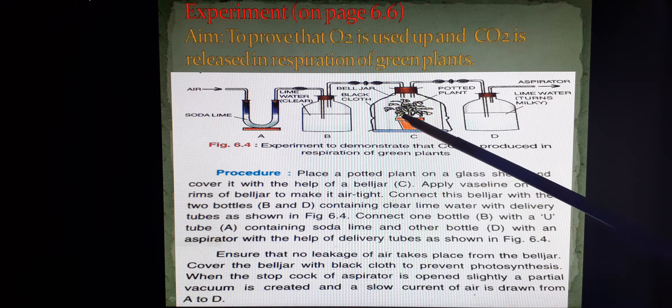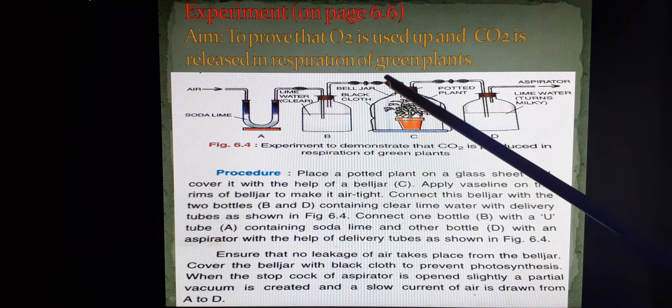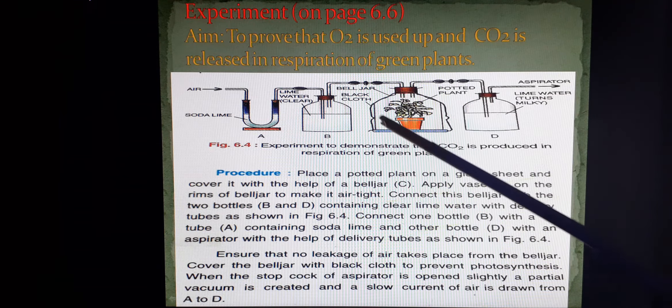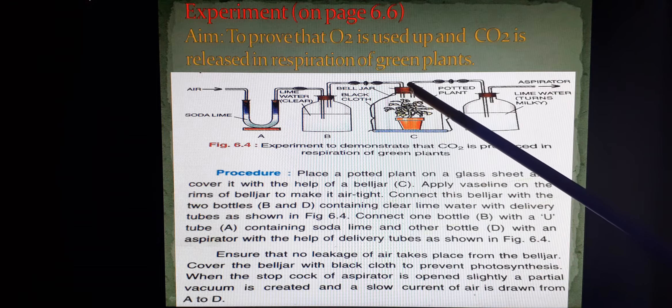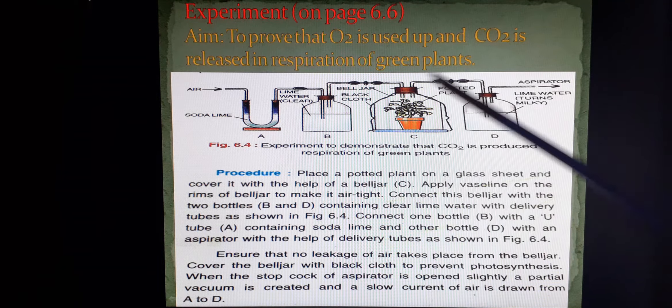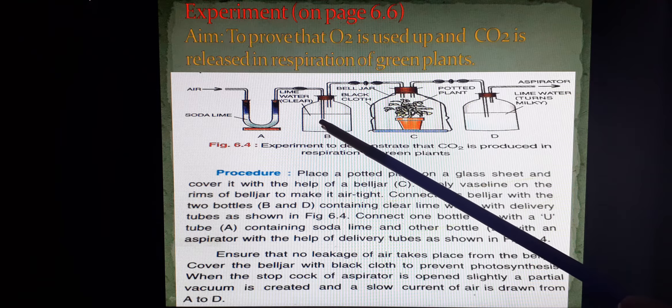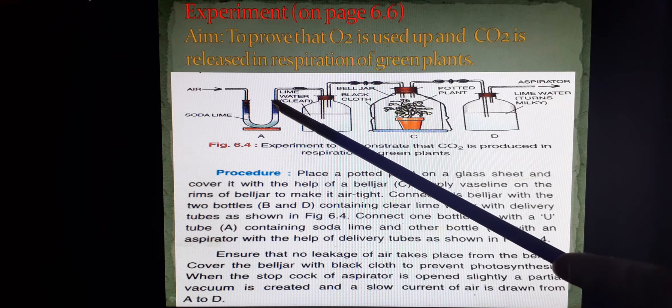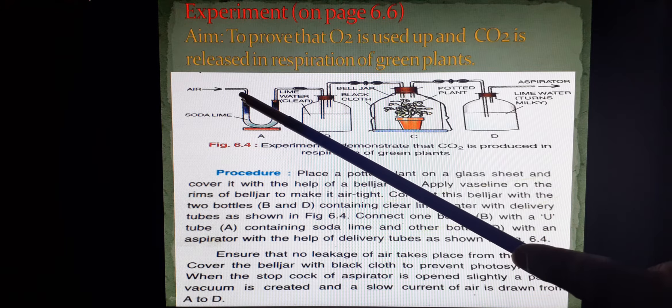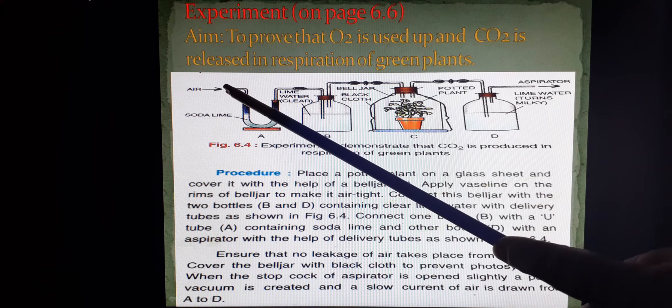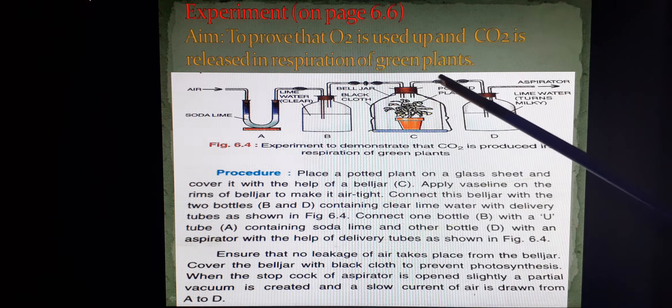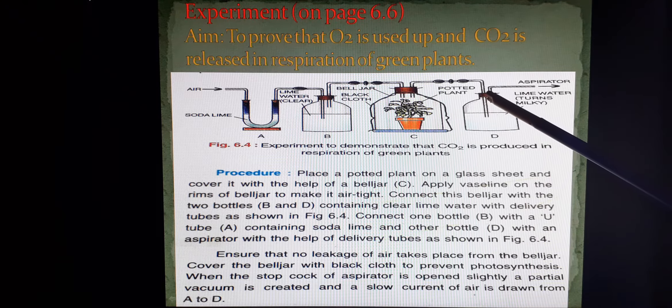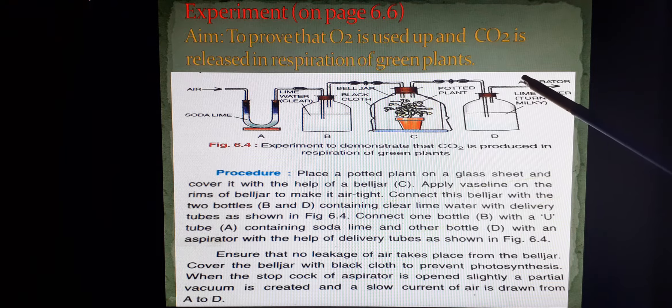The rim of the bell jar is sealed with vaseline so that the whole apparatus becomes airtight. The upper end of the bell jar has a stopper with two holes to which there are two bent tubes attached. To the left side, this bent tube goes into a bottle containing lime water. On this end, another bent tube comes out and joins with a U-tube containing soda lime. To the extreme end of the apparatus, there is another bent tube. On the right side of the setup C, this bent tube enters the bottle D which is again containing lime water. In this bottle D, there is a stopper to which the second bent tube is attached, which is attached to the aspirator.